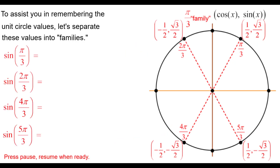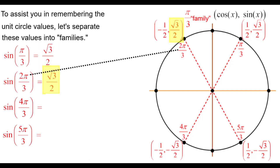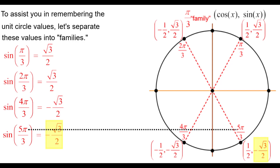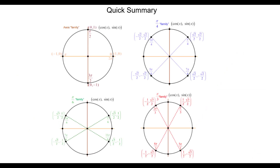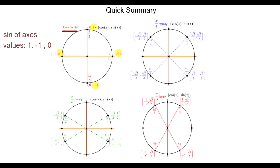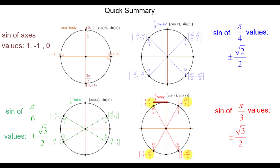And finally, the π/3 family: the sine of π/3 is positive √3/2. The sine of 2π/3 is positive √3/2. The sine of 4π/3 is negative √3/2. The sine of 5π/3 is negative √3/2. In summary: the sine of axis values is 1, negative 1, or 0. The sine of π/6 values are ±1/2. The sine of π/4 values are ±√2/2. The sine of π/3 values are ±√3/2, depending on the quadrant.